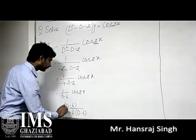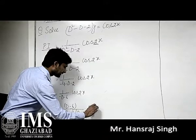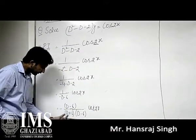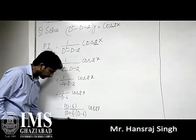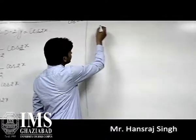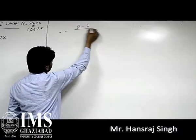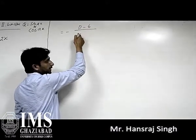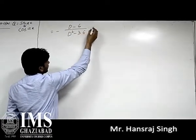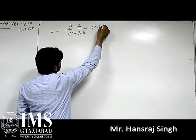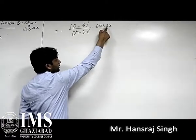So we have minus (D minus 6) upon (D² minus 36) into cos(2x). Students, this uses the formula (a+b)(a-b) = a² minus b². We replace again D² by minus a².